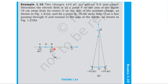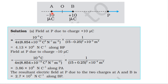Two charges: minus 10 microcoulomb and plus 10 microcoulomb placed at points A and B. Point P is along the axial line at a distance of 15 centimeter from the center O. We need to find the electric field along the axial line and also on the equatorial plane, 15 centimeter from the center O.